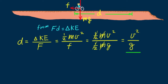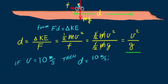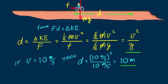Let's put some numbers into this problem. Suppose her initial speed is 10 meters per second. We don't need to know her mass, the bike's mass, or the color of the road surface — all we need is the initial speed and g equals 10 meters per second squared. Then we see the distance she skids is 10 meters.